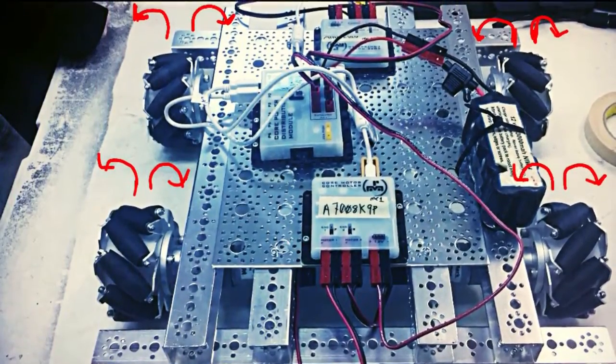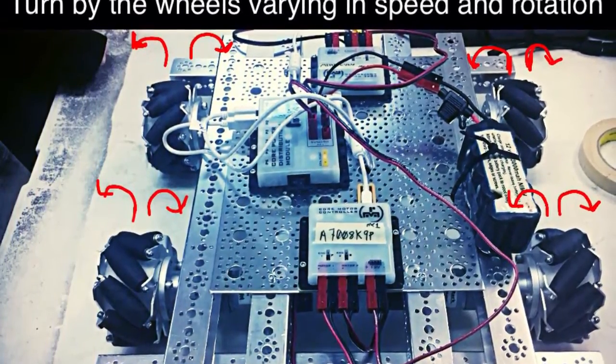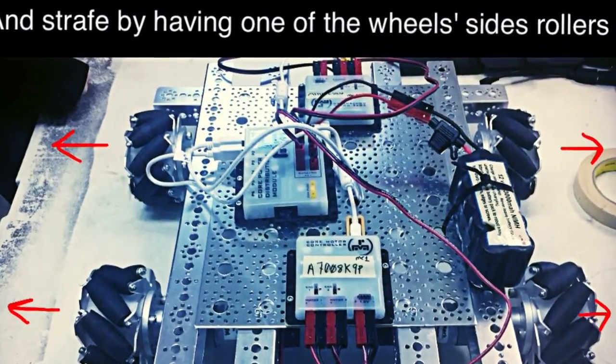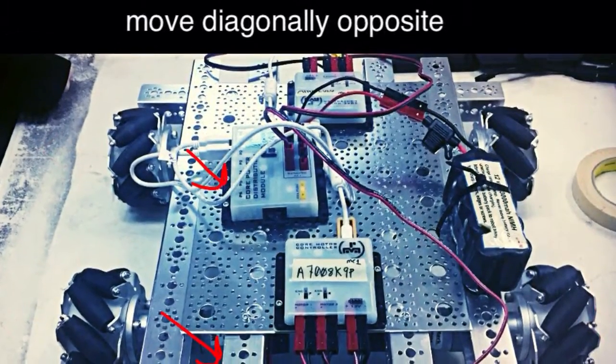Turn by the wheels varying in speed and rotation. And strafe by having one of the wheel's sides rollers move diagonally opposite.